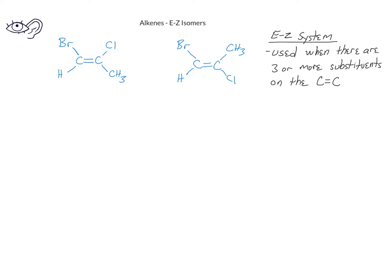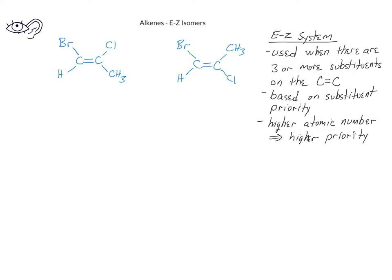The E/Z system is based on a priority of the substituents that are on the carbon-carbon double bond. For each of the substituents on one of the sp2 hybrid carbons, we determine which is higher priority and which is lower priority. We then do the same thing for the second sp2 hybrid carbon. In determining priority, we assign higher priority to the substituent where the first atom has a higher atomic number than the first atom on the other side of that sp2 hybrid carbon.